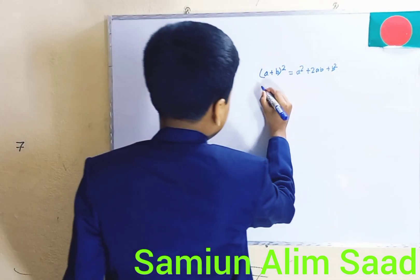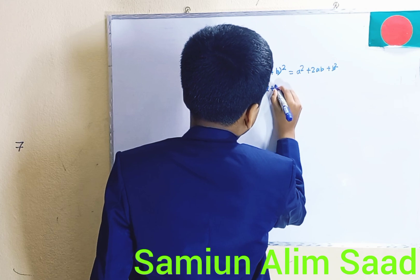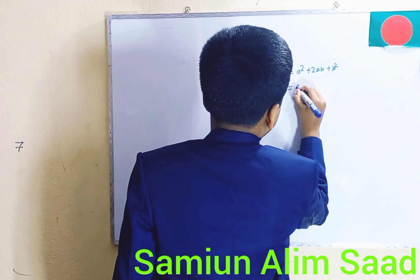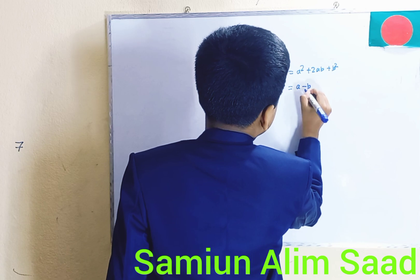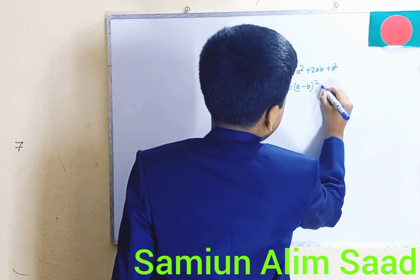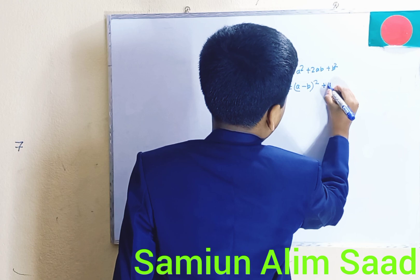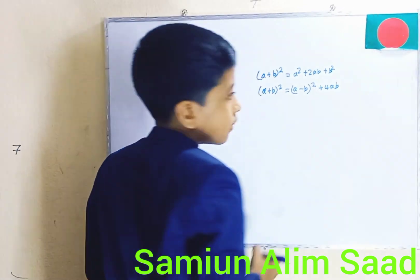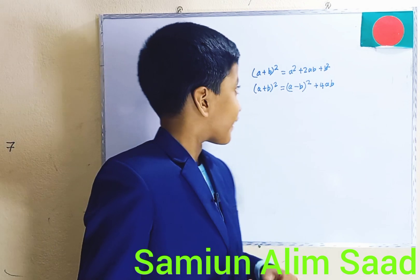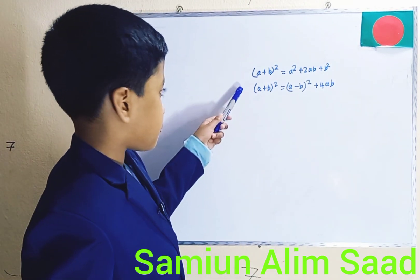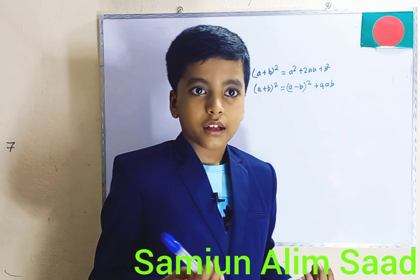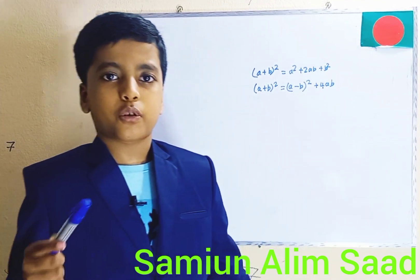But A plus B whole square has another formula as well. That is: A plus B whole square is equal to A minus B whole square plus 4AB. This is the formula you'll encounter after you learn the first one. Those are the same starting point — two options to choose from.